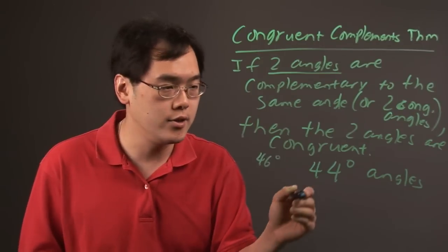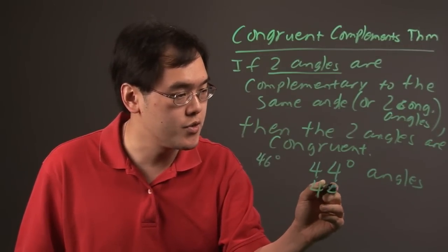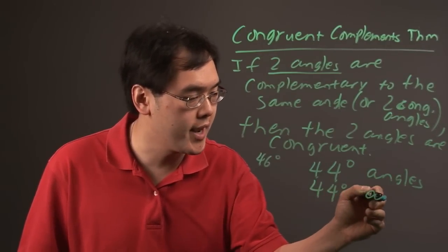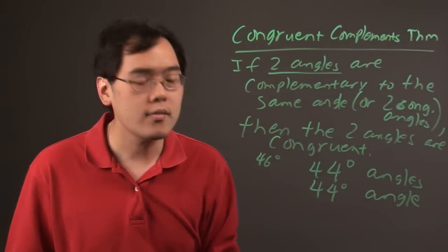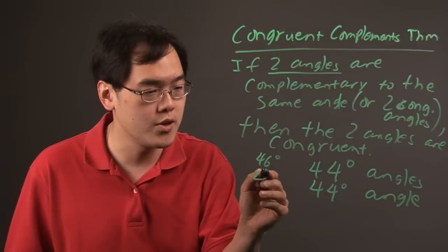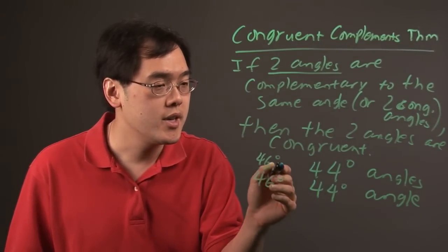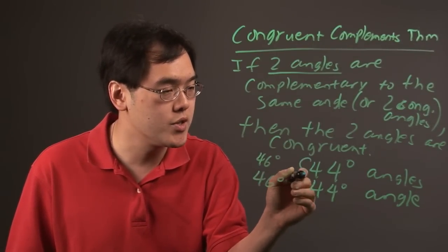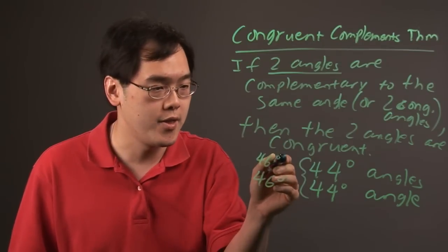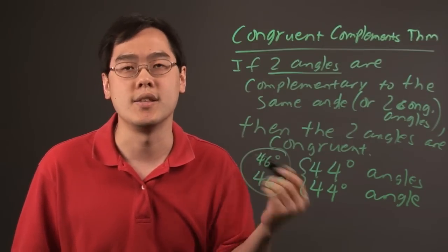And you have another angle that's also complementary to a 44 degree angle, then that other angle is also 46 degrees. But the fact of the matter is, if those two angles are complementary to the same 44 degree angle, then those two angles have to be the same.